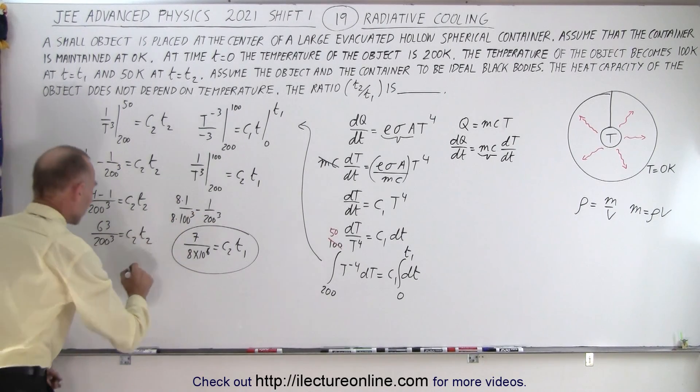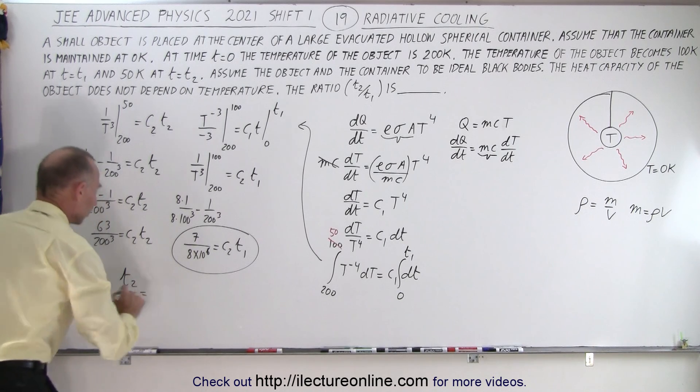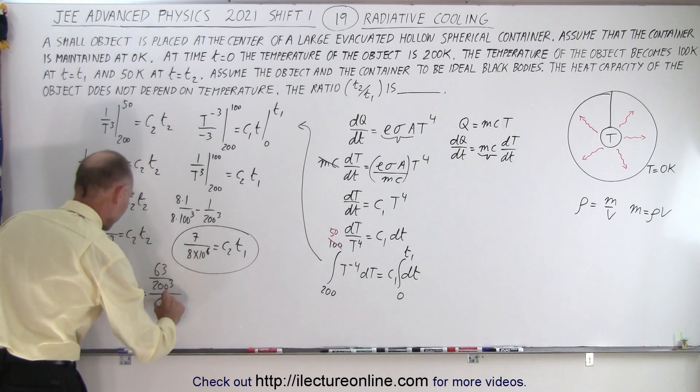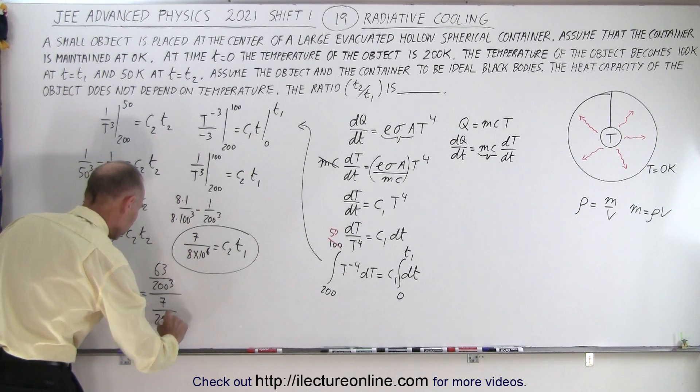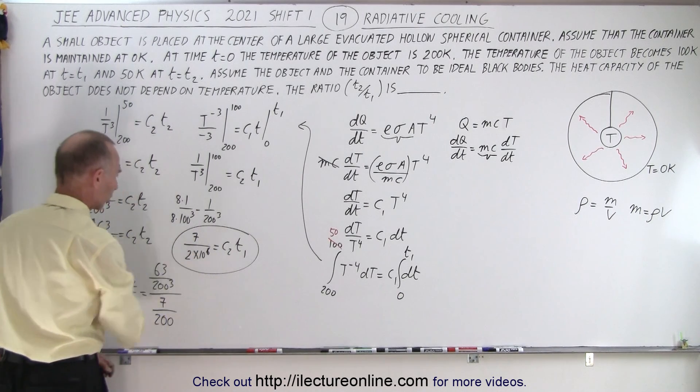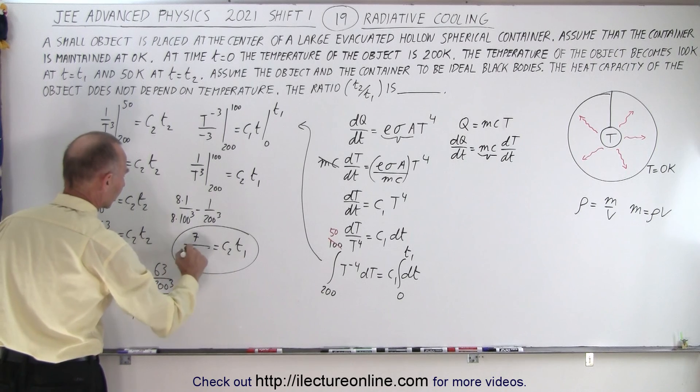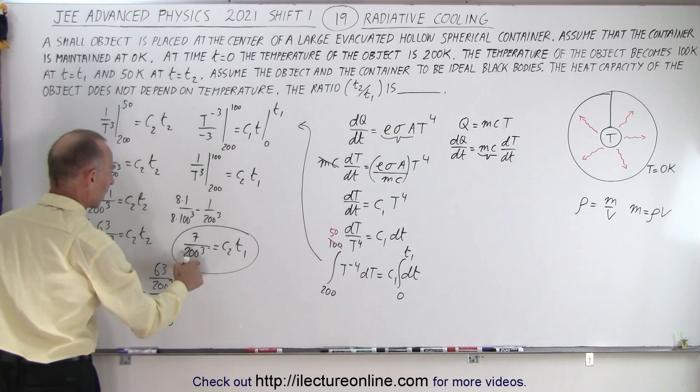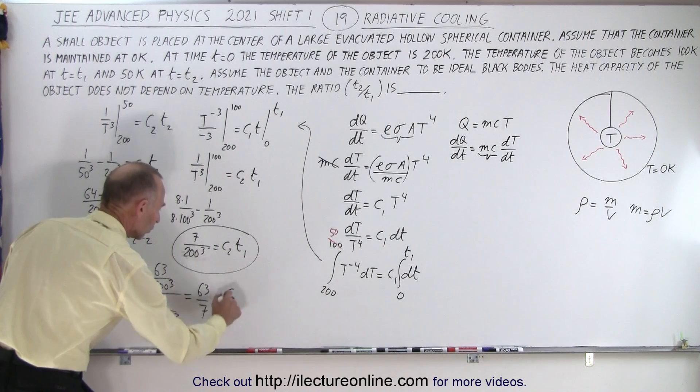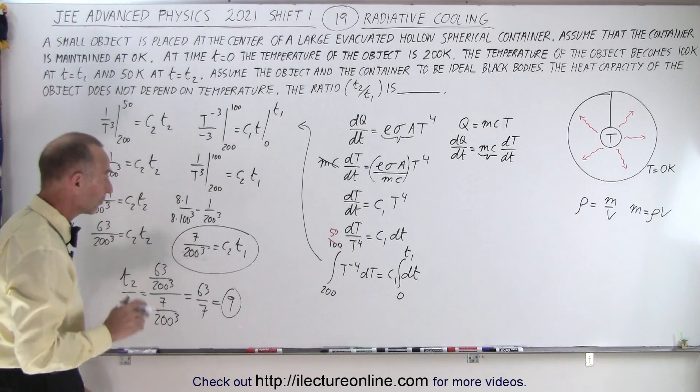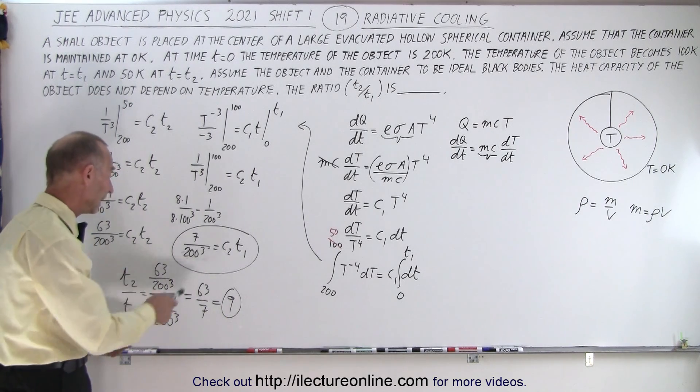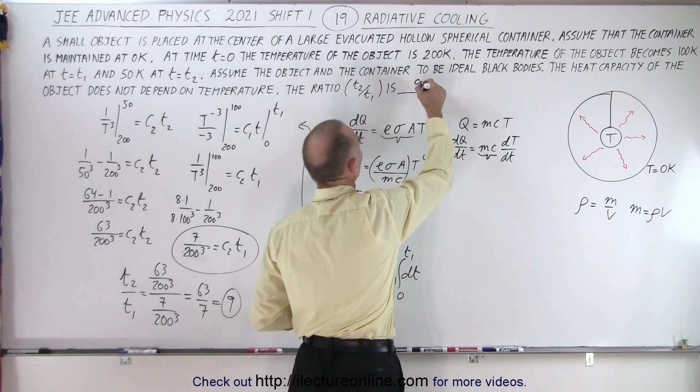Finding the ratio t₂/t₁: (63/200³)/(7/200³) = 63/7 = 9. The ratio of time to go from 200K to 50K versus 200K to 100K is 9 to 1—that's our answer.